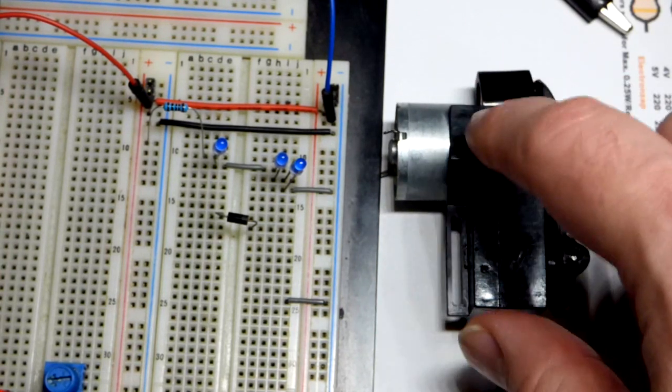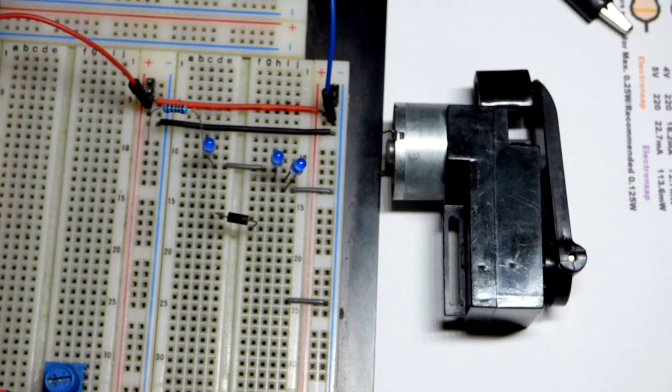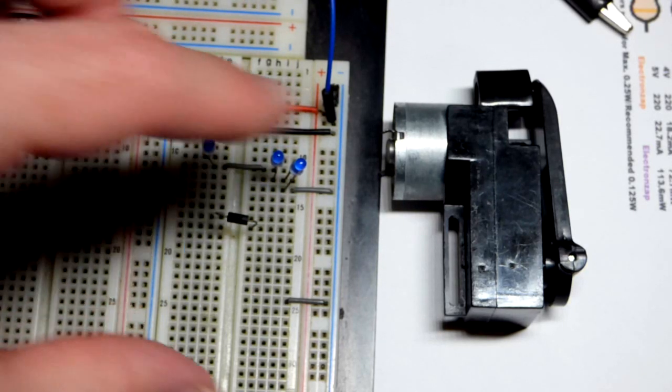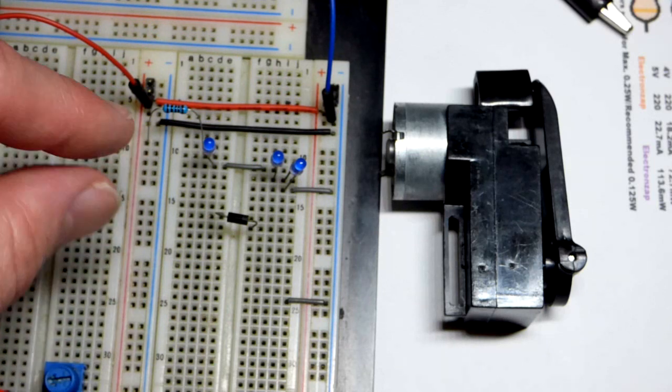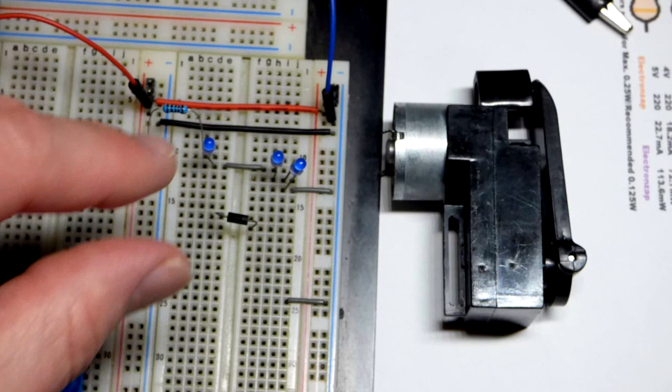So in any case we got the hand crank generator, as you saw it lit the LEDs, pretty straightforward. Probably got 15 volts across it. Again if we were powering like a little battery or something, we would have to have a diode.